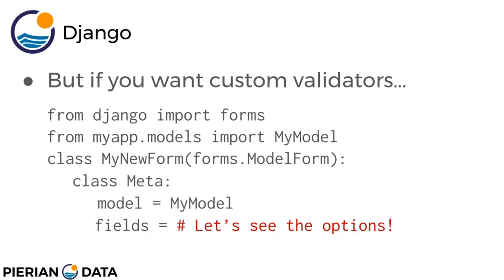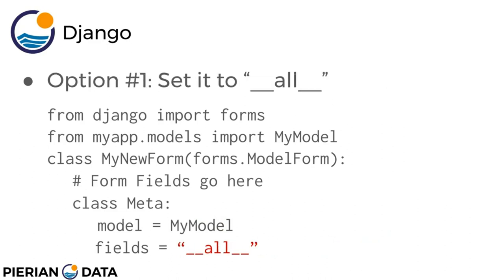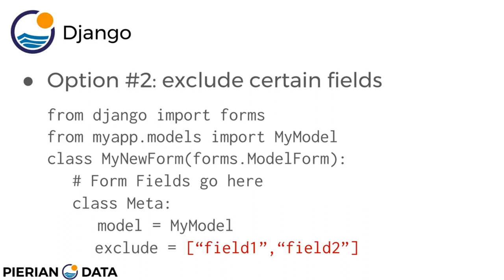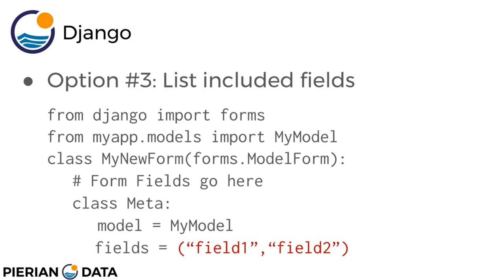There are several ways to handle the fields attribute inside the inline Meta class. Option one is to set it to the special keyword '__all__', which grabs all fields from the model and places them into the form. Option two is to use the 'exclude' attribute, passing in a list of field names you want to exclude from the form. Option three is to actually list only the included fields you want to appear in the form.